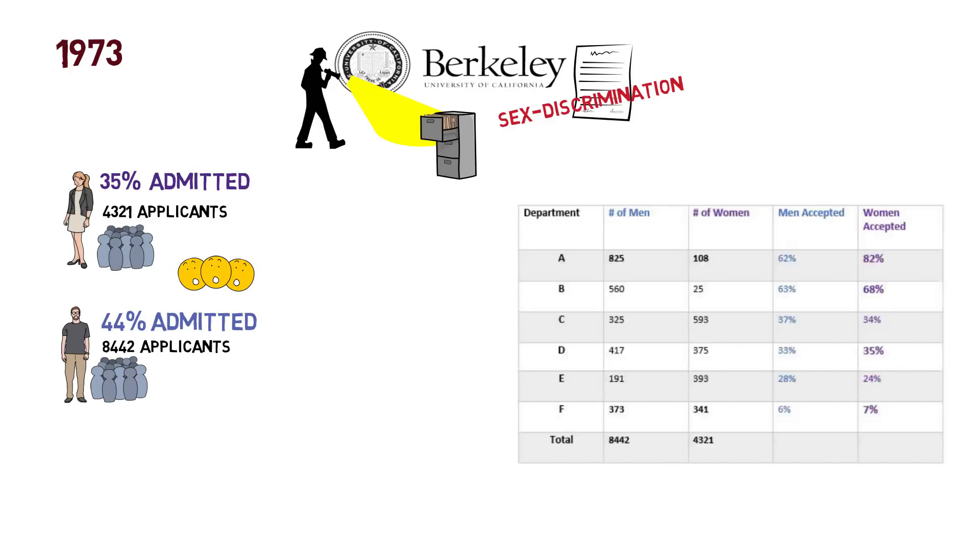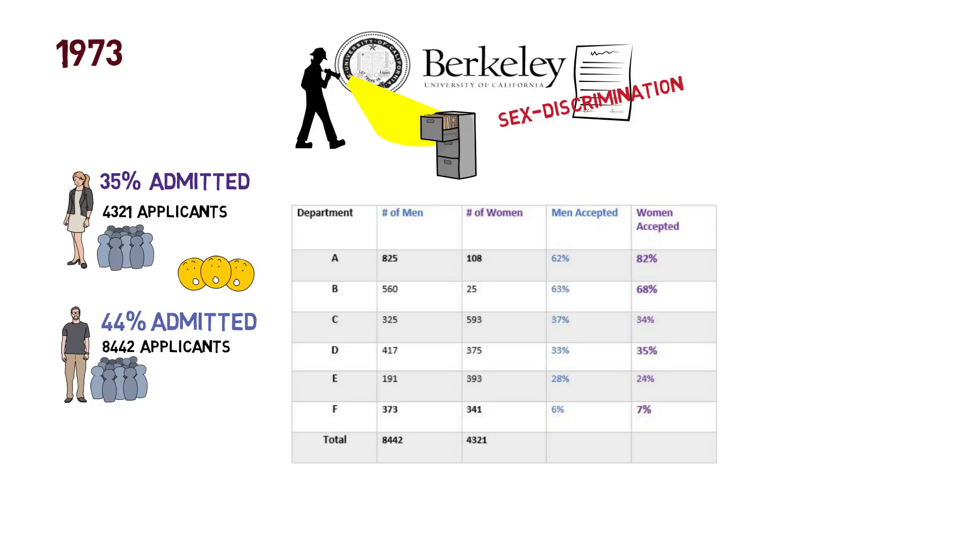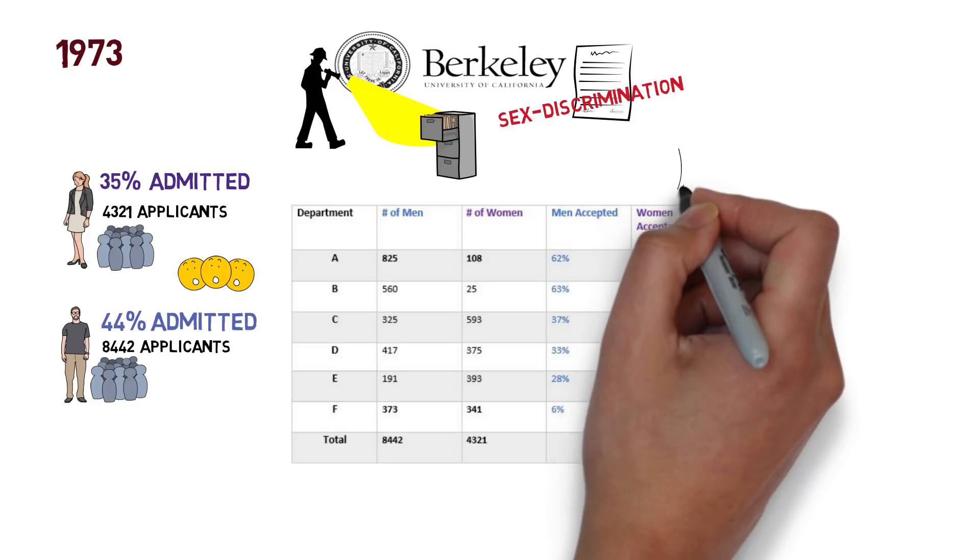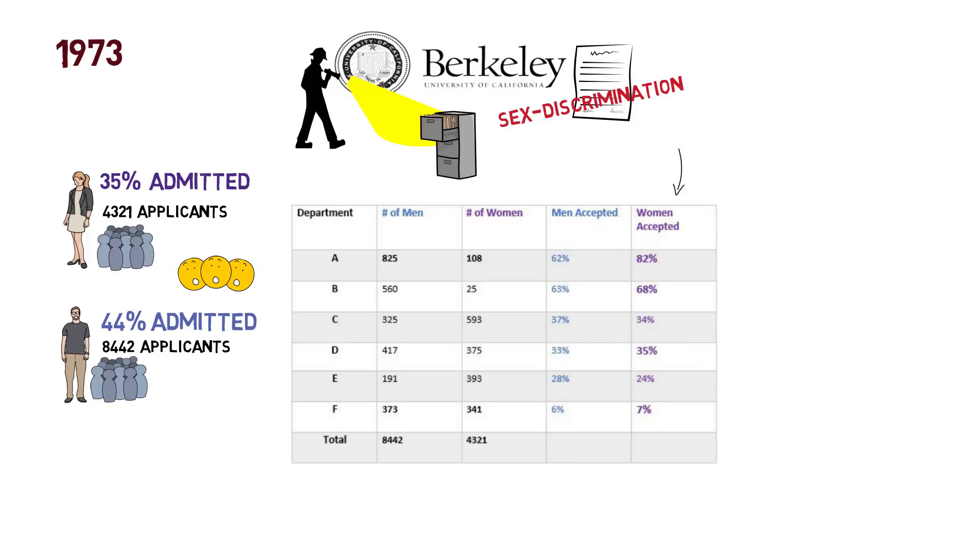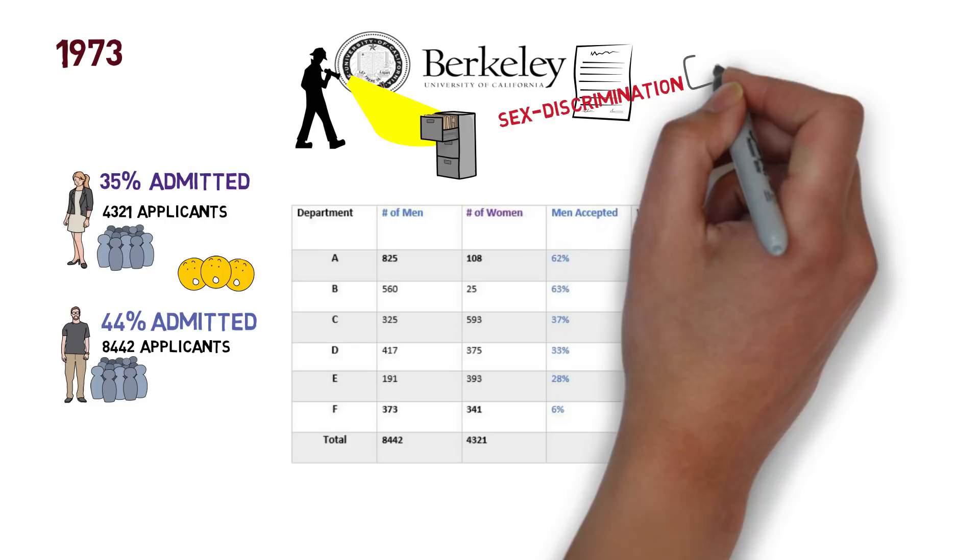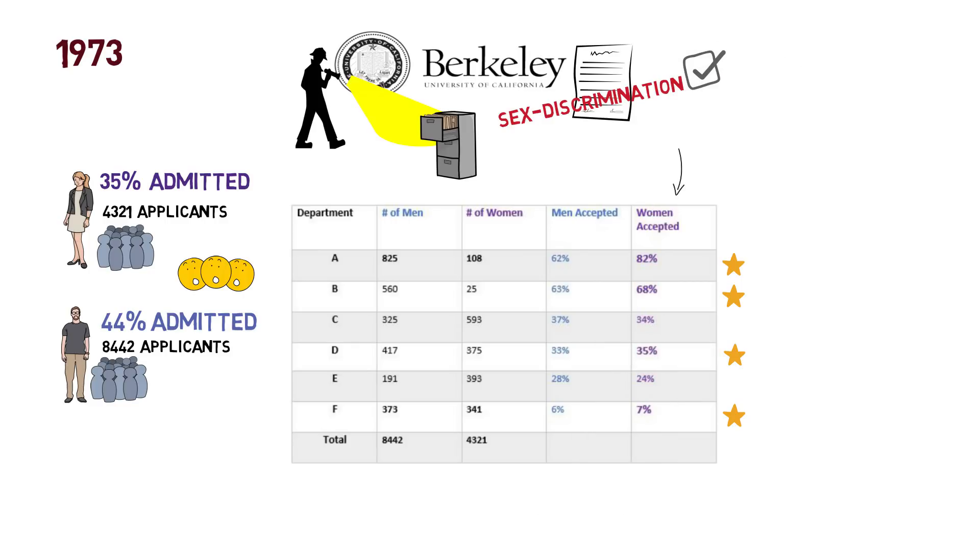Now this is where the data gets funny. After breaking open the data, we see a different story. Out of the six departments, four of the departments accepted more women than men. There definitely was a gender bias, but it was in favor of women, not against. But that begs the question: why did the aggregated data tell a different story?